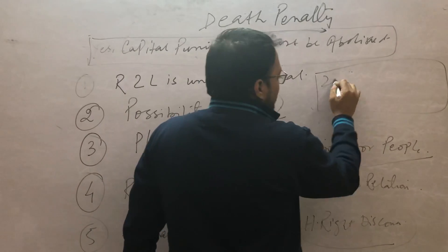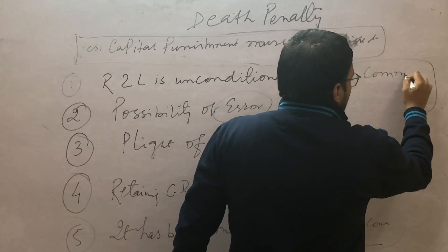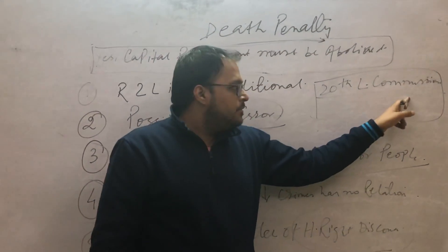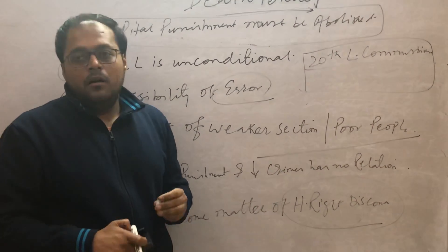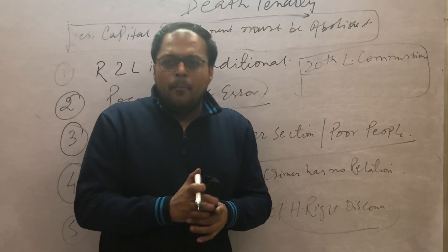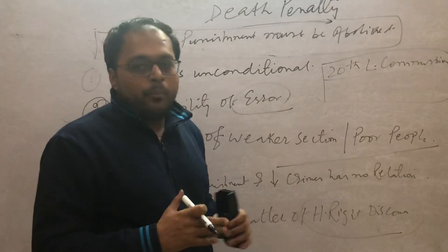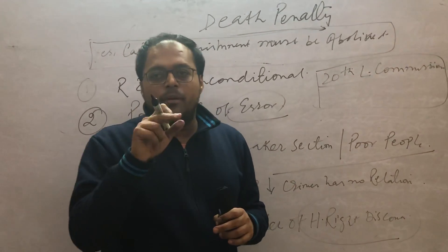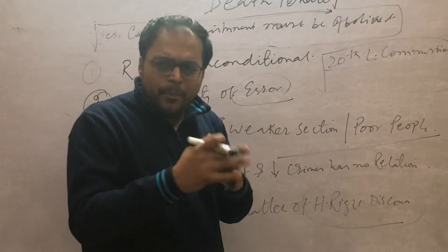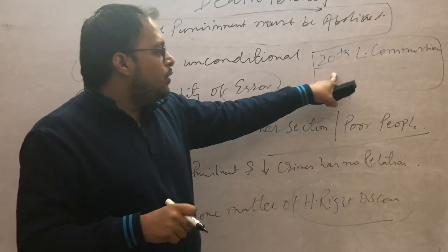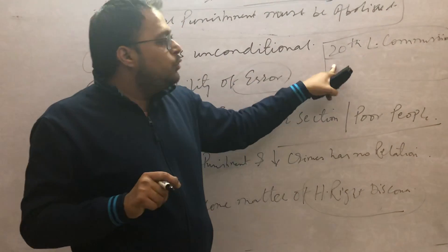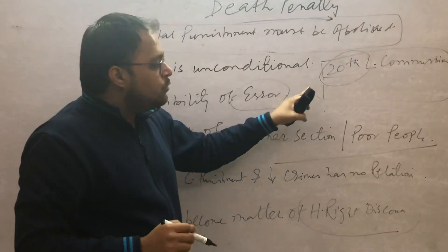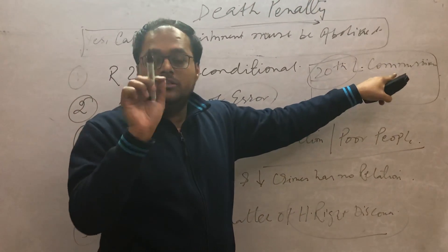The 20th Law Commission forwarded that there should be a debate on how to abolish the death penalty. However, there were some dissenting members who raised the question that there should be a difference between people who committed terror activities and people who committed ordinary murder or ordinary crime. The debate is ongoing, but mentioning the 20th Law Commission report number in a GS paper answer will give you an added advantage.